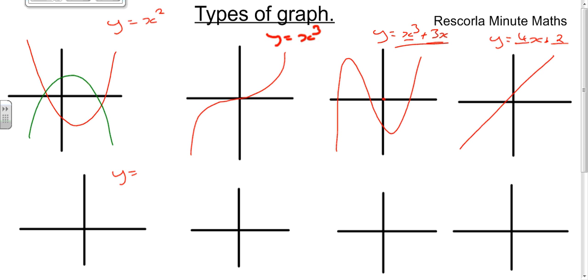If it was y equals, say, minus something x and minus 3x plus 3, that would slope downwards. So when it's the minus, it slopes downwards. When it's positive, it slopes upwards.